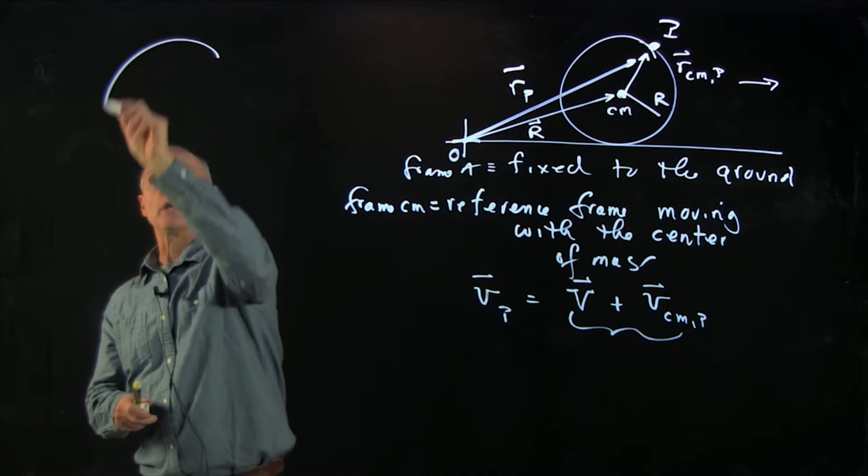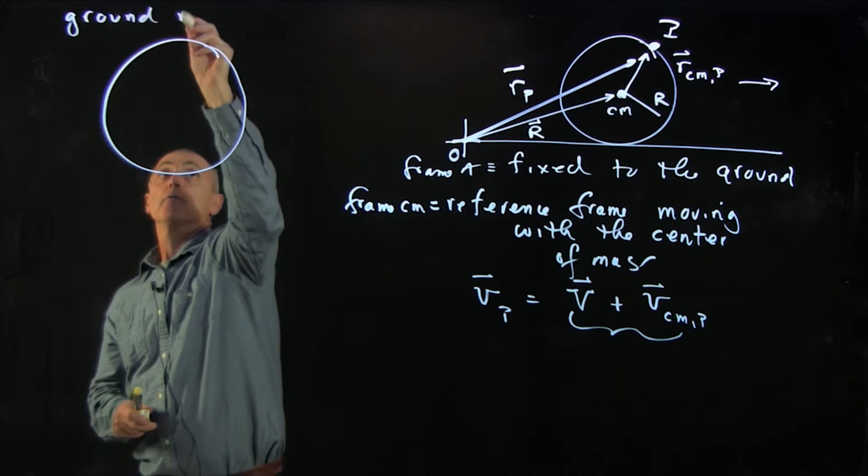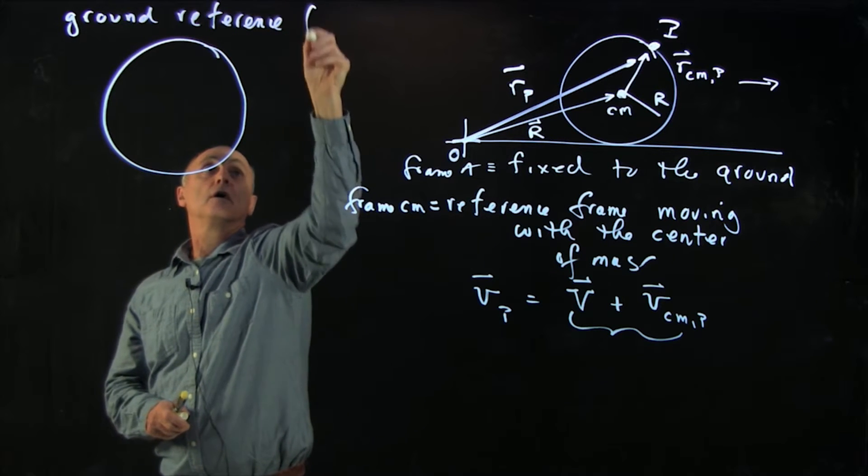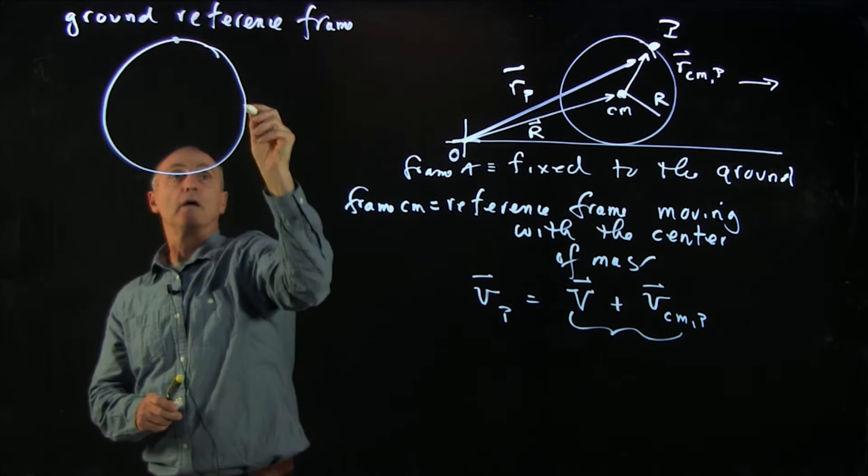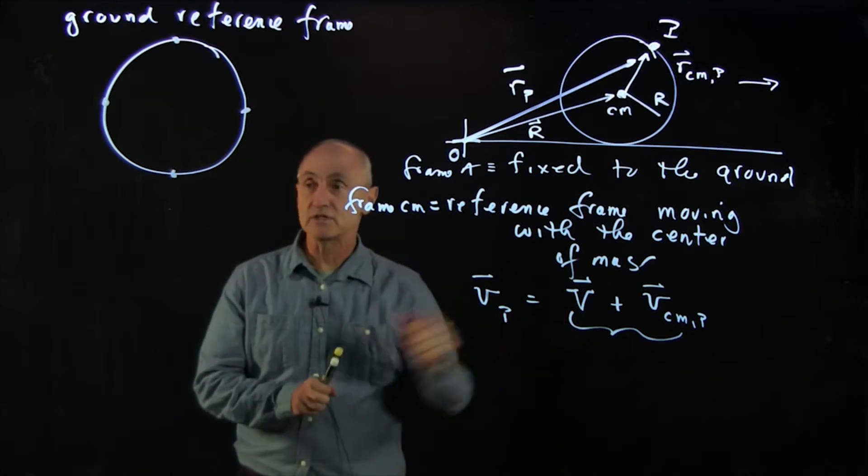So let's draw a picture of our wheel. Here we're in the ground reference frame. And let's first draw four points on the wheel and draw this velocity v.